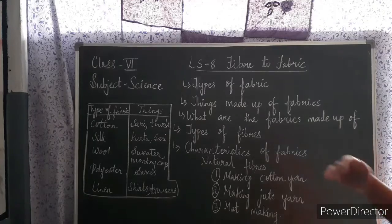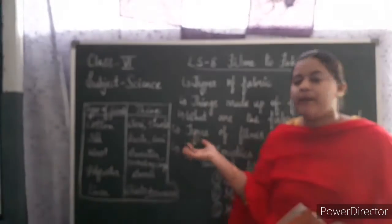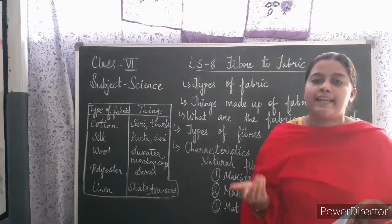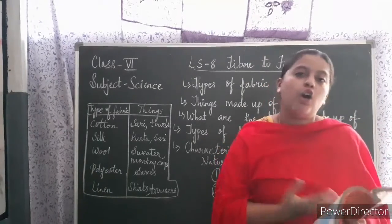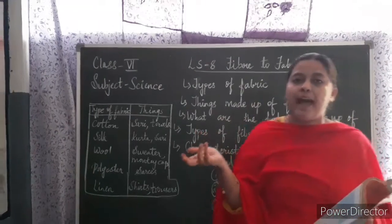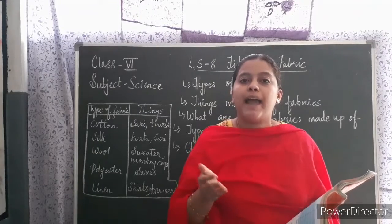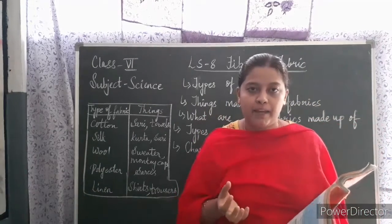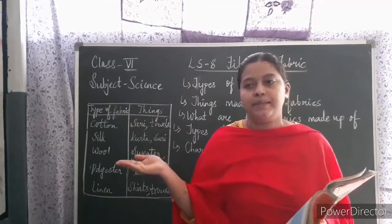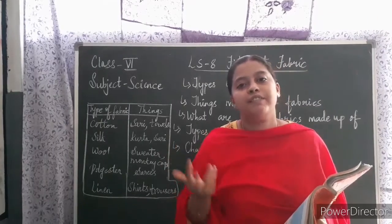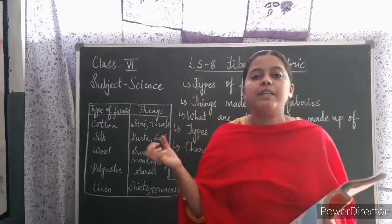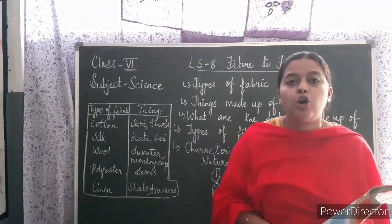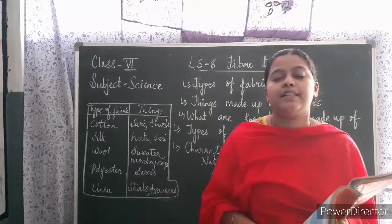Coming to types of fibers: there are different types of fibers — cotton, jute, wool, silk, and so on. Cotton and jute are obtained from plants, while silk and wool are obtained from animals. The fibers obtained from plants — cotton and jute — are known as natural fibers. The fibers made by chemicals are known as artificial fibers; examples include polyester and linen. Polyester fiber is made up of petroleum.